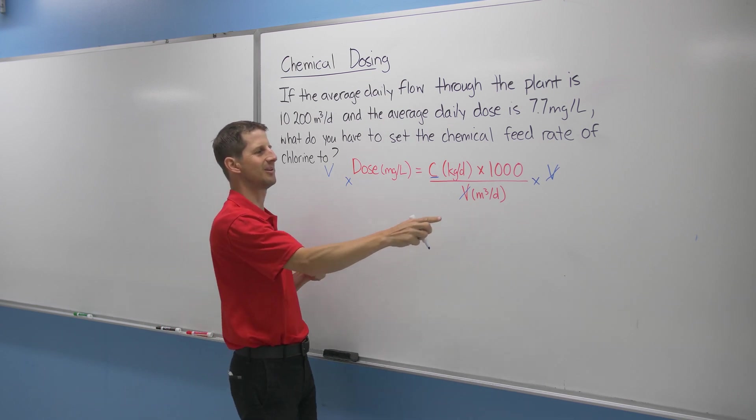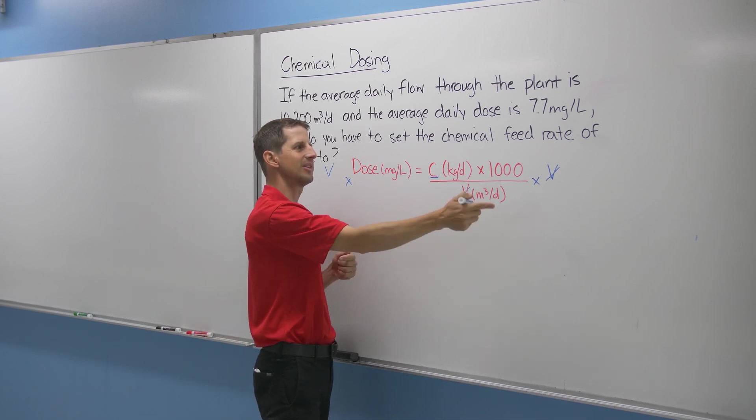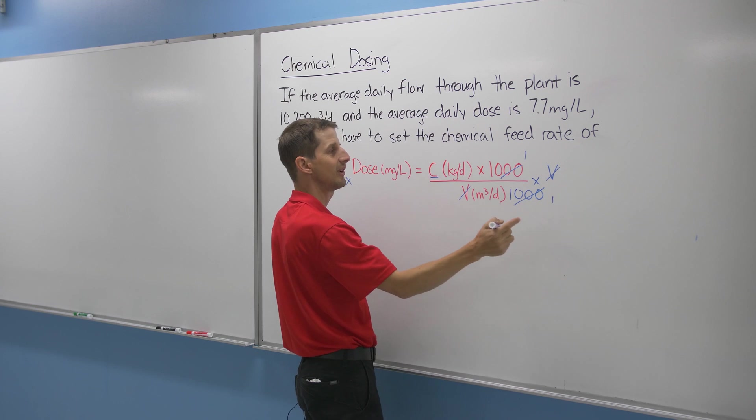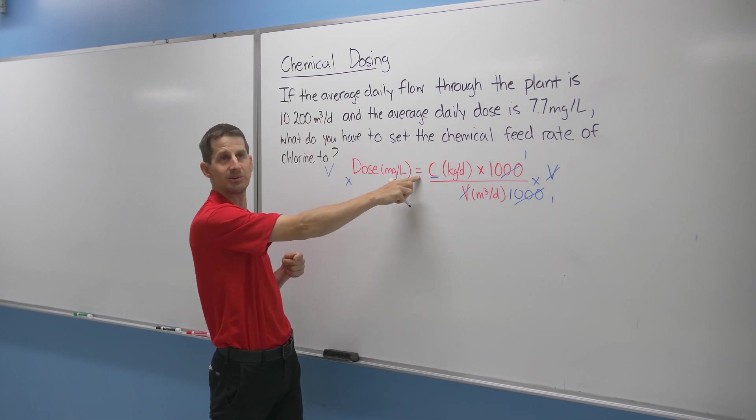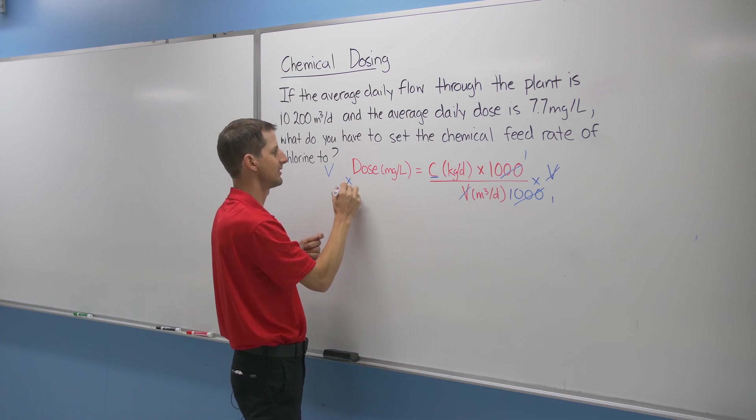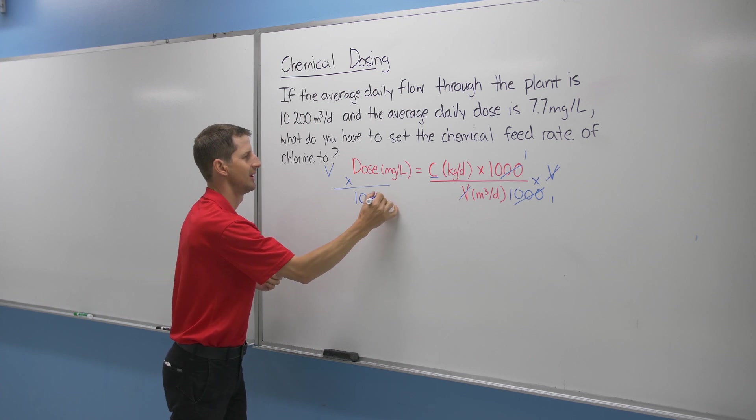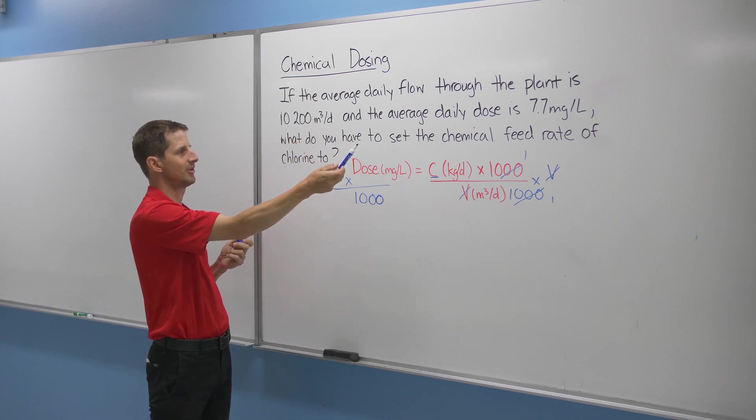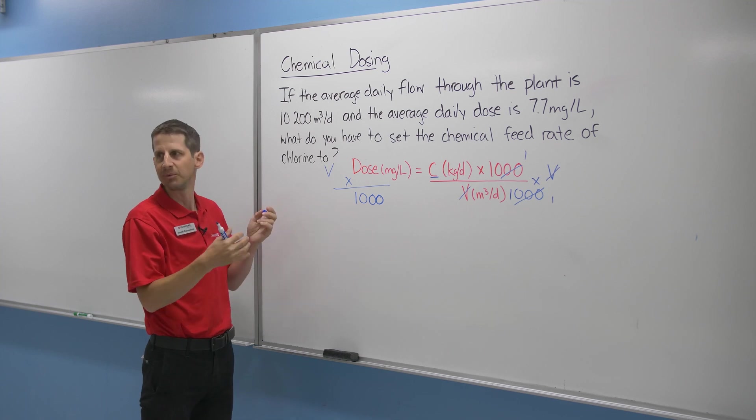And then the other term we need to get rid of is the thousand. Well, if there's a thousand on top, we could divide by a thousand and then we'll cancel out to one. But if we divide this side of the equation by a thousand, it's an equal sign. So what we do over there, we've got to do over here too. So we divide by a thousand. So there's your manipulation that we're going to do: our volume times our dose divided by a thousand and we've got our answer.